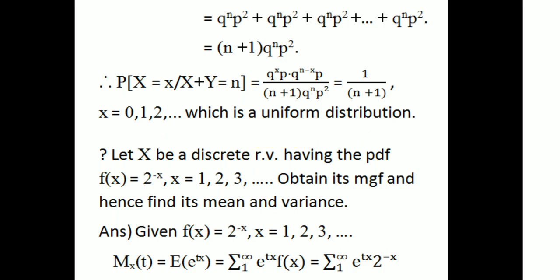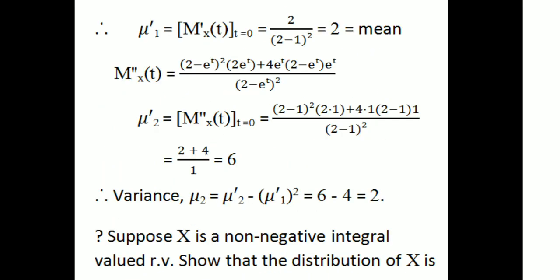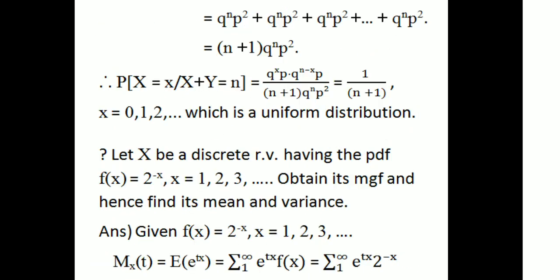Since P(X = x | X + Y = n) = 1/(n+1) for x = 0, 1, 2, ..., n, this is a uniform distribution. Next question: Let x be a discrete random variable with PDF f(x) = 2^(-x), for x = 1, 2, 3, ... Obtain its MGF and hence find its mean and variance.